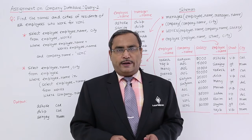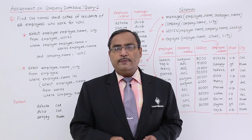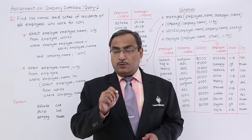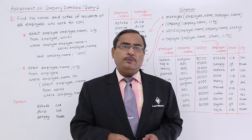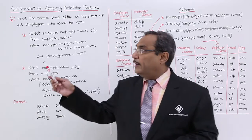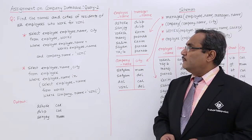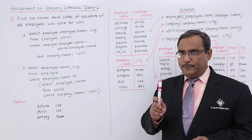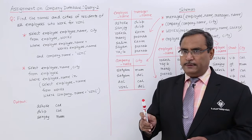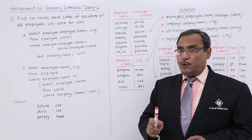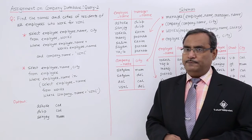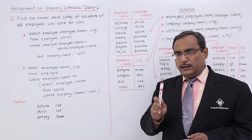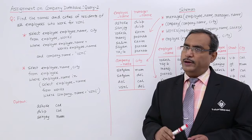Let us discuss our second query. In the second query we shall be dealing with some tables, and from the query we shall have to find out what tables should be involved in the query execution. Here is the query: find the names and cities of residents of all employees who work for VSNL.